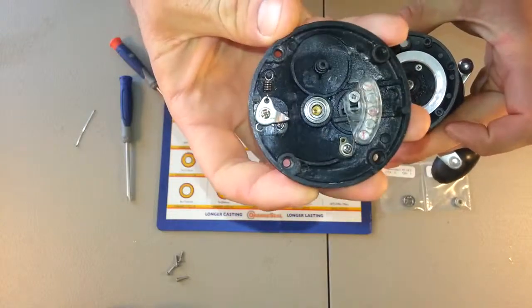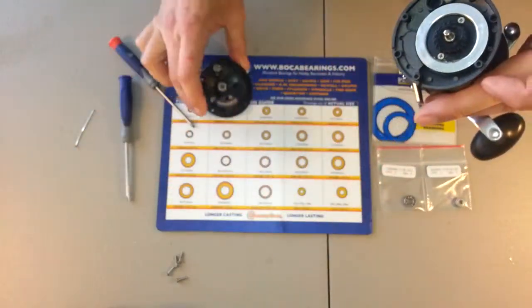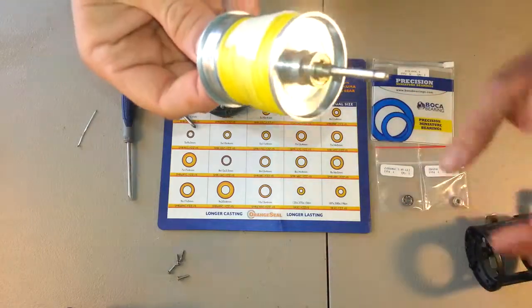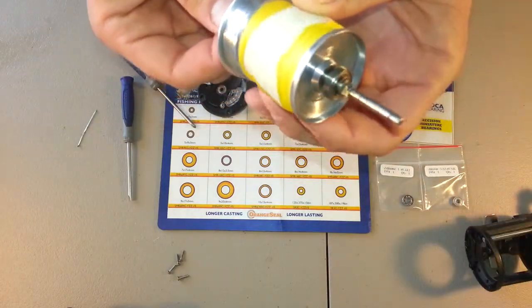One of the bearings is right there in the side plate. Remove the spool out of the reel, and the other bearing is right here on this side plate.